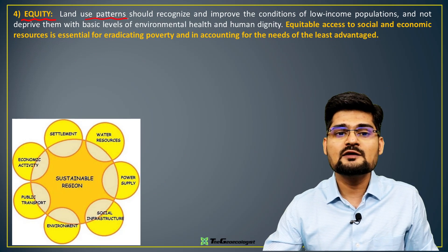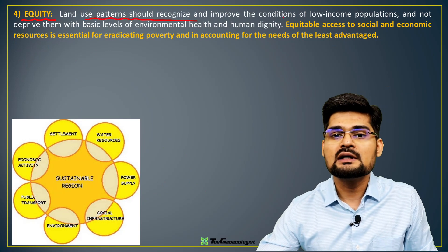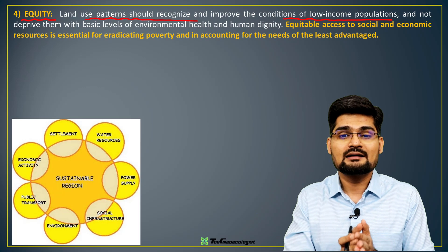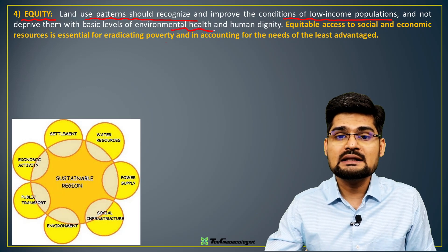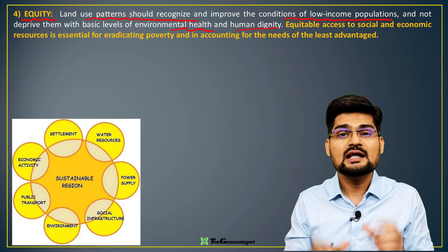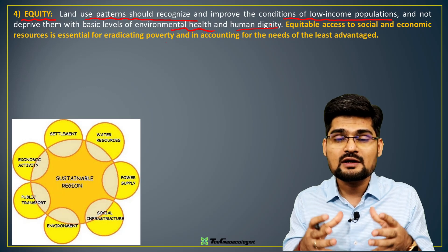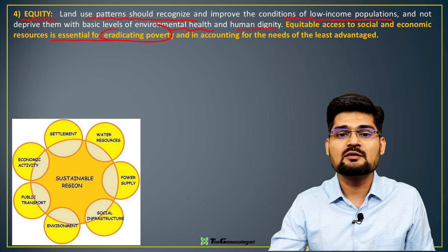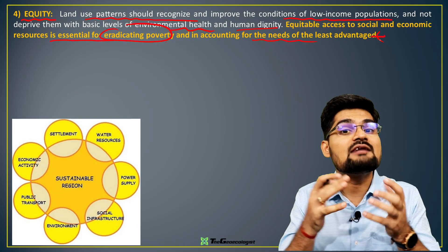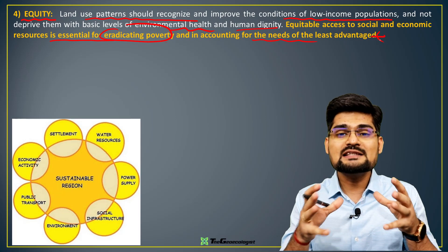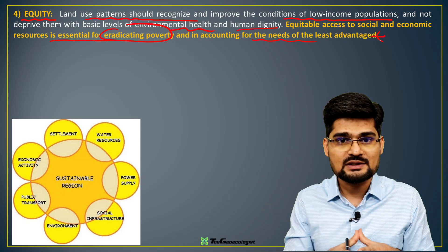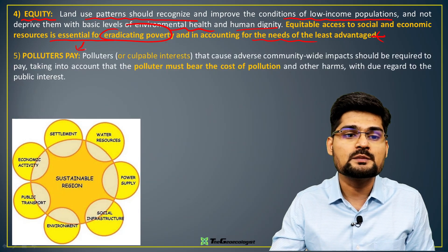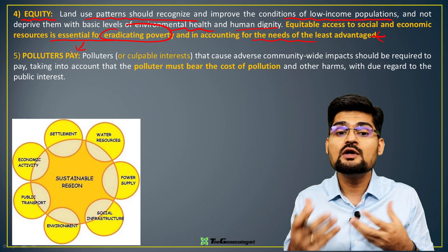The fourth principle is equity. Land use patterns should recognize and improve conditions of low-income populations alongside higher-income populations — it should not be lopsided. Environmental health and human dignity should be given priority, with equitable access, affordability, and availability of resources. Eradicating poverty and accounting for the needs of the disadvantaged are essential so that these people are integrated into the system.